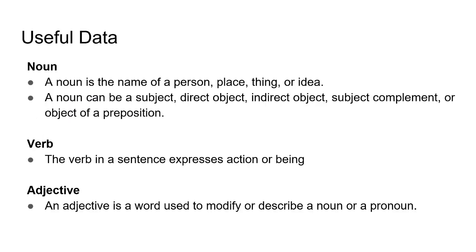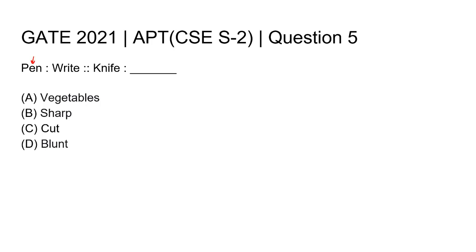To solve this question, we need to know some concepts of English grammar. A noun is the name of a person, place, thing, or idea. In our question, pen is a thing, so pen is a noun. Knife is also a thing, so knife is also a noun.